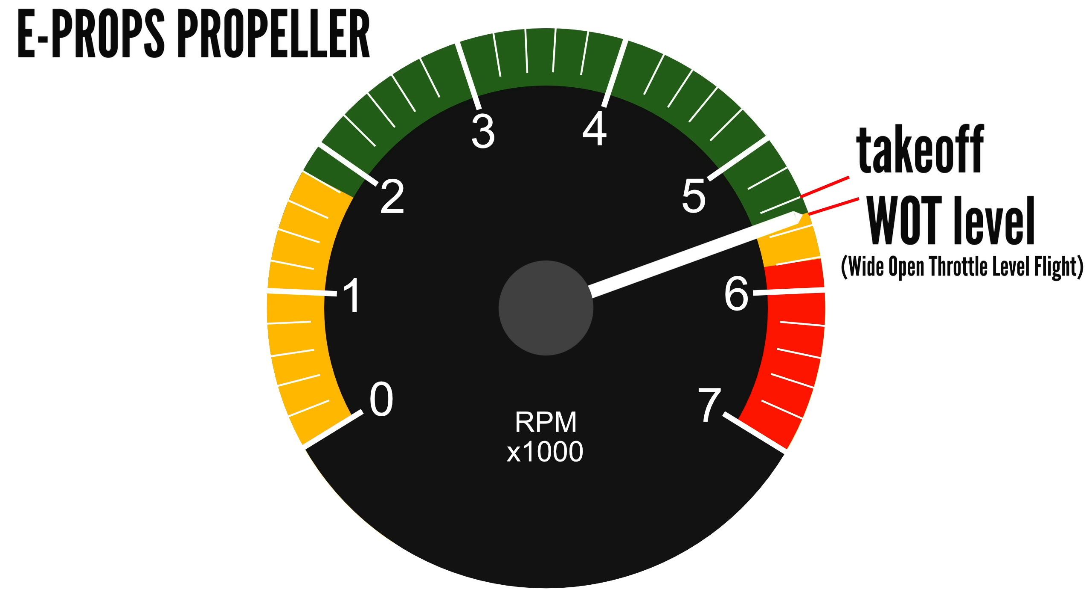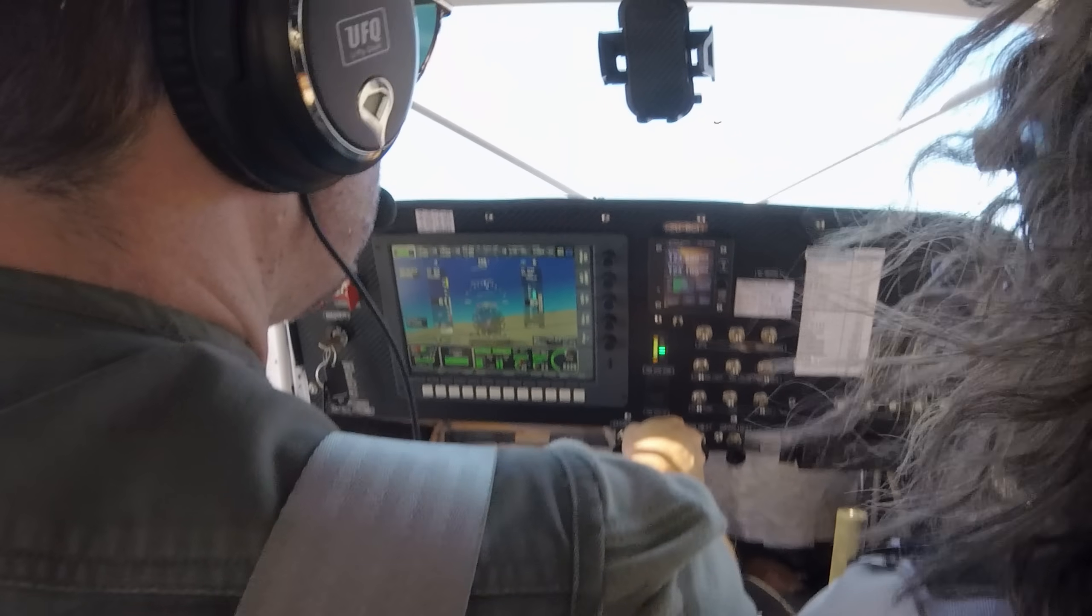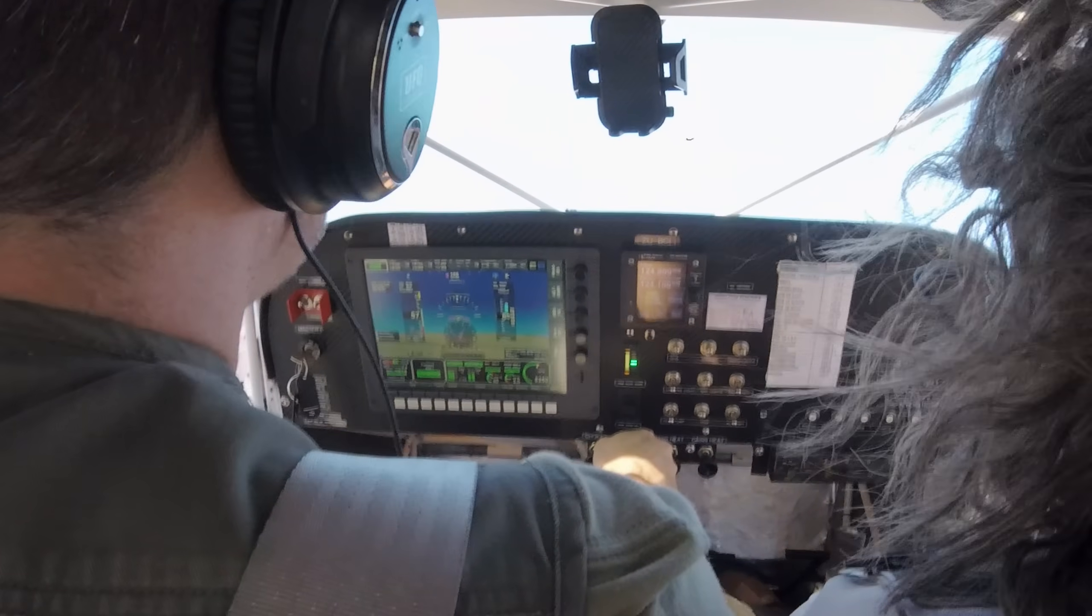This means the engine retains more usable RPM in cruise, reducing the need to throttle back to prevent engine overspeed.